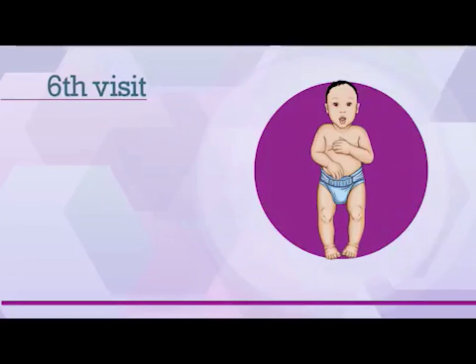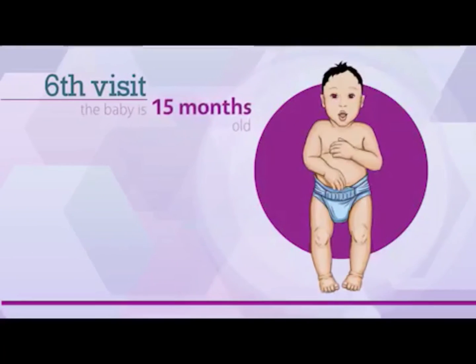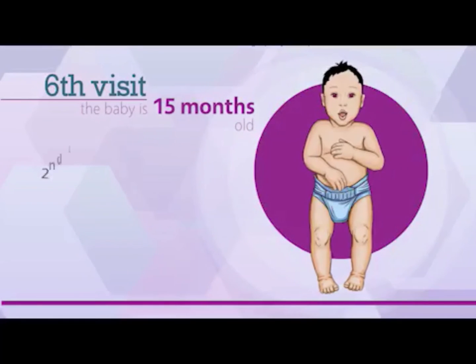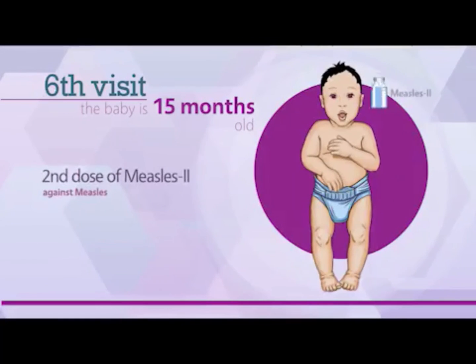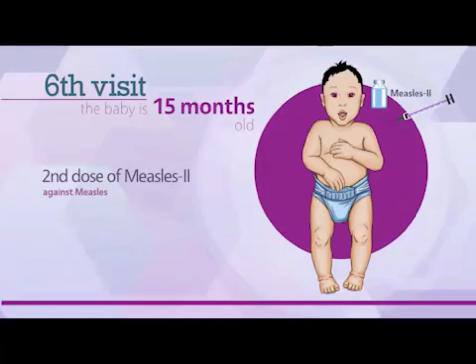The sixth visit is scheduled when the baby is 15 months old. On this visit, the second dose of measles 2 vaccine is administered subcutaneously in the left arm for protection against measles.